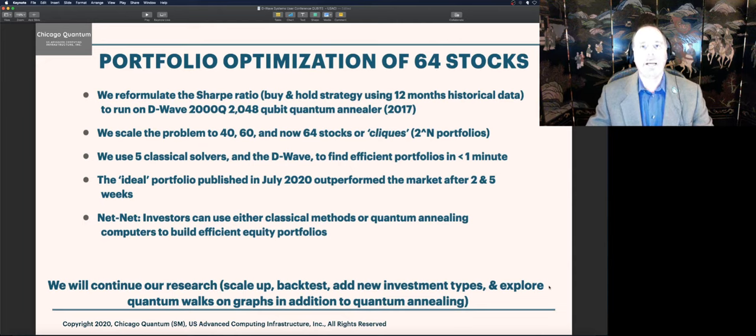We used five classical solvers and the D-Wave to find efficient portfolios in under a minute. The ideal portfolio we identified the first time with 60 stocks, we published on Medium. We've been tracking the results of that portfolio. By the way, it's doing great. Beat the benchmarks in the first two measurement periods. We just now published a second portfolio based on 64 stocks on August 31st. Net-net, what we found in the second paper is that investors can use either classical or quantum annealing systems to pick stocks, pick efficient portfolios.